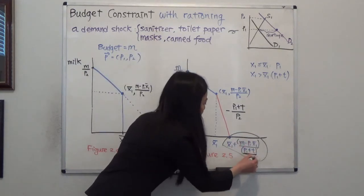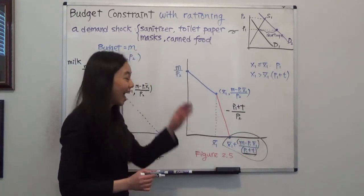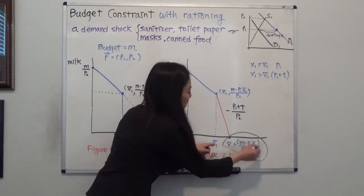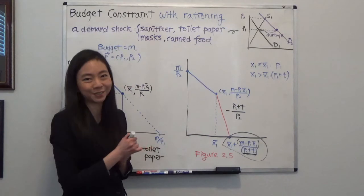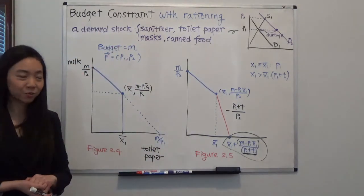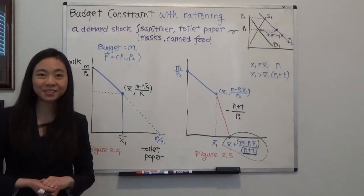So plus x1 bar, that will be the total number of toilet paper that I purchased. So this is my budget constraint with rationing. I hope this helps. I'll see you next time.